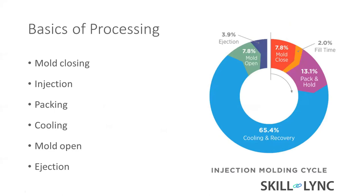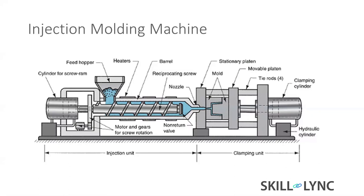Coming to the basic processing - if you take an injection molding cycle, this is a major portion. The basics I'll cover in two or three slides, and in the molding simulation classes we'll mostly focus on this basic processing. It involves mold closing, injection, packing, cooling, mold open, and ejection. Mold open and close is about 15%, fill time is just 2%, packing and holding is about 13%, and the remaining percentage is cooling and recovery. The smallest portion is ejection.